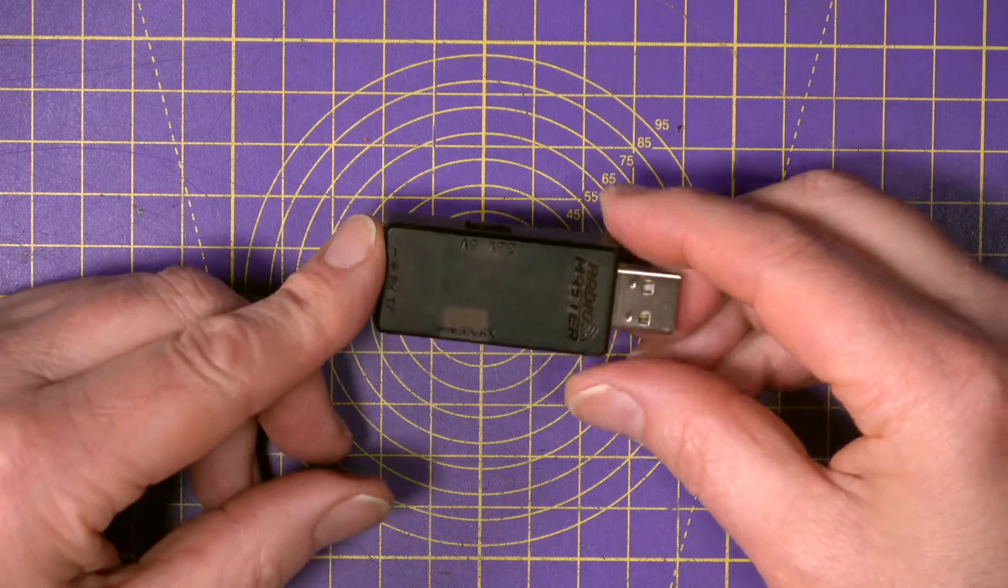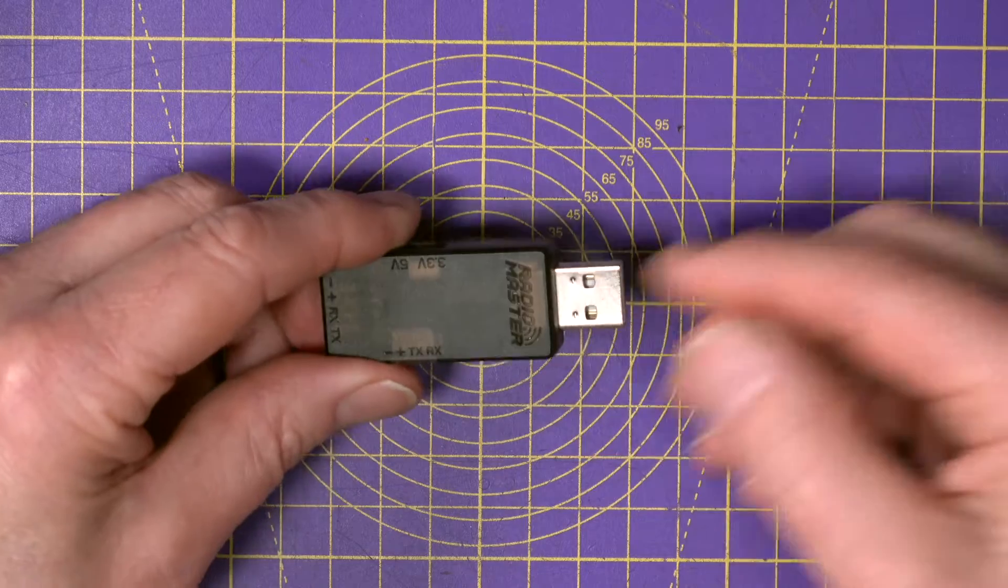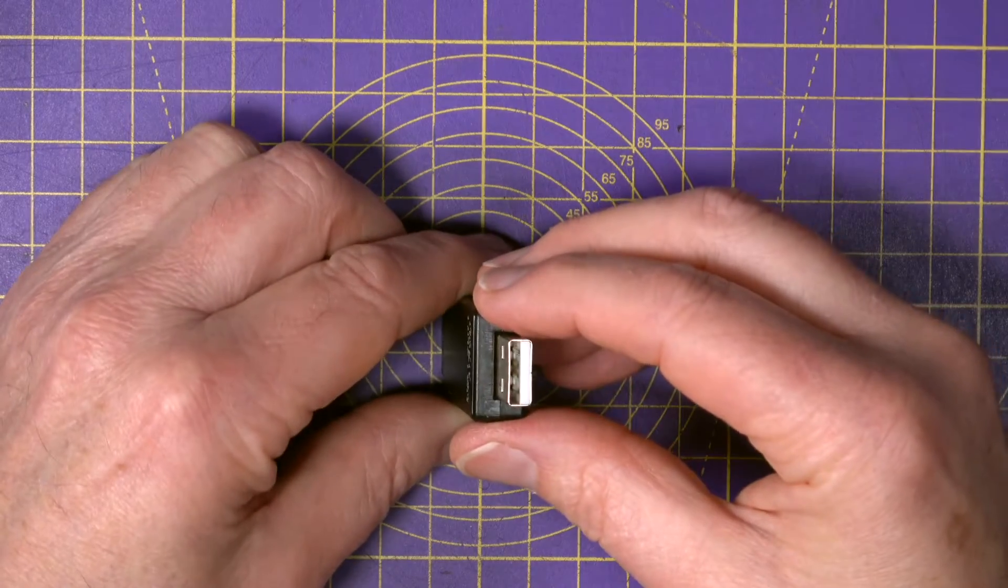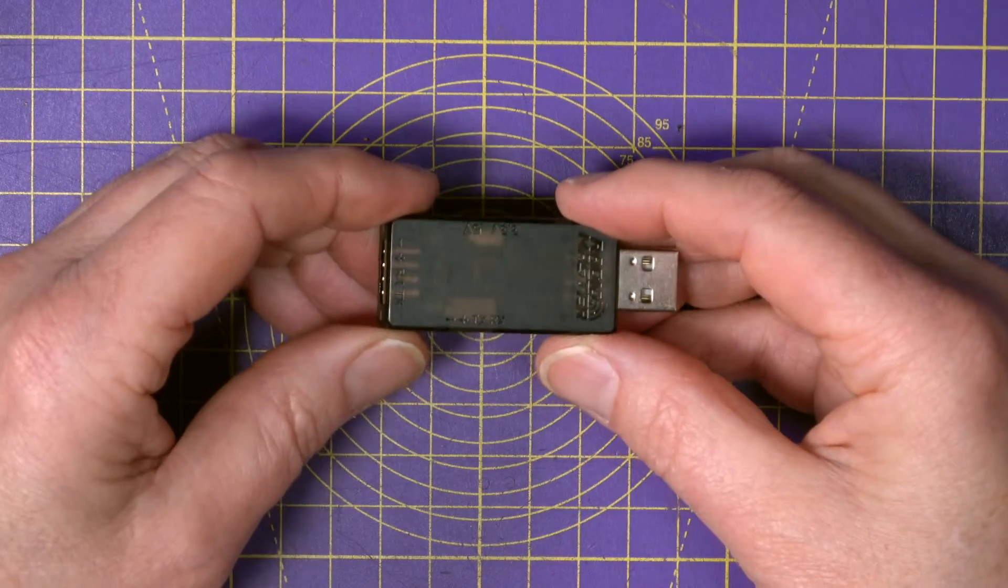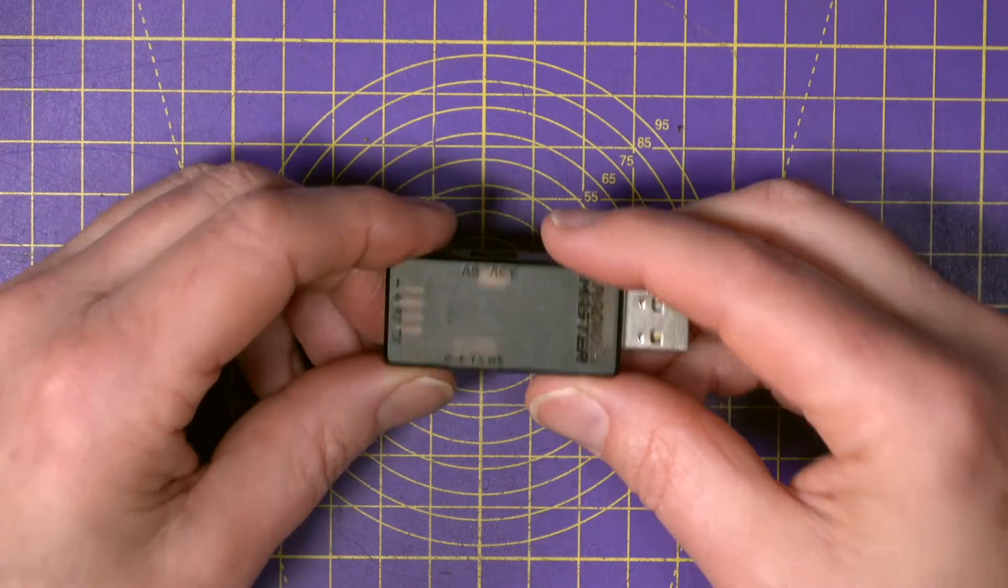Well this RadioMaster ELRS USB flasher dongle is the answer. You just plug this into your computer and select it with the ExpressLRS configurator and connect it to your receiver and off you go.